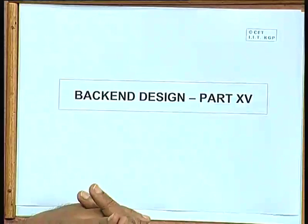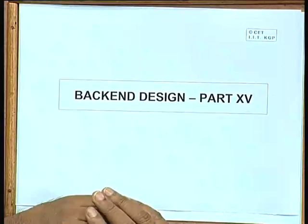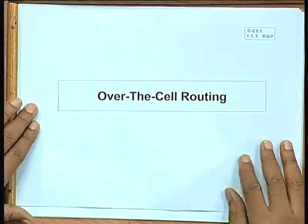In this class we shall be talking mainly about two things. There is something called over-the-cell routing, which is applicable to standard cell based designs. We will be talking about the basic idea of over-the-cell routing and how people normally do it. After that we shall also be talking about layout compaction, which is typically a post-processing step after routing is completed. Let us start with our discussion on over-the-cell routing.